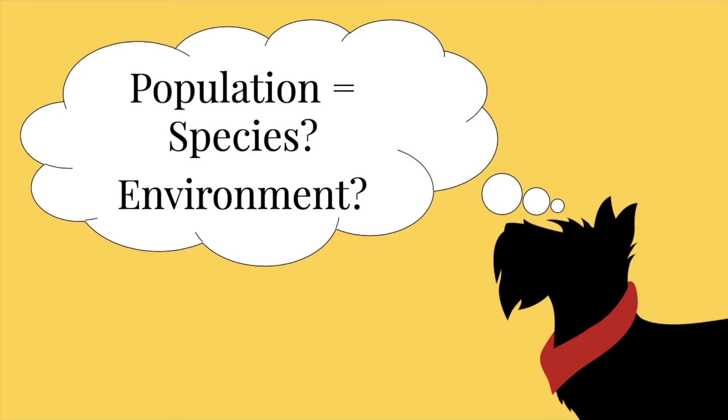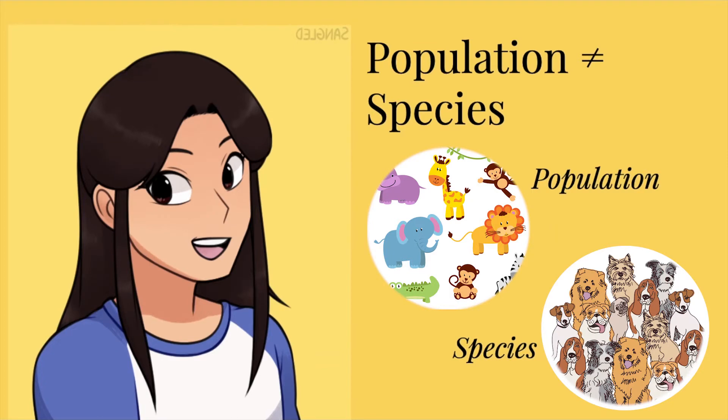Wait, hold on. Is population the same as species? What's an environment? To answer your first question, a population is not the same as a species. While a population describes a group of any animals who live in the same environment, a species is more specific. A species is the largest group of animals that are similar enough so that they can make babies with each other. So, a species living in the same environment can be called a population, but not all populations are a species.